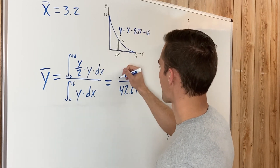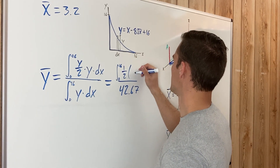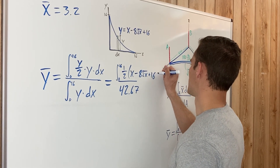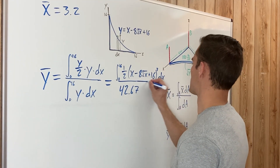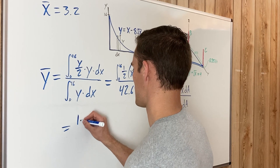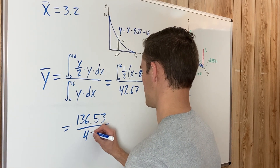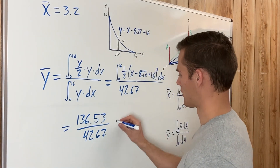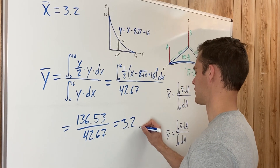Plugging in our equation for y, we pull out the one-half and integrate (x − 8√x + 16)² from 0 to 16 — since y times y gives y², which expands from the function. This is a slightly more complex integral, but evaluating it gives 136.53 in the numerator divided by 42.67 in the denominator. That's the same result as before, giving ȳ = 3.2 feet.